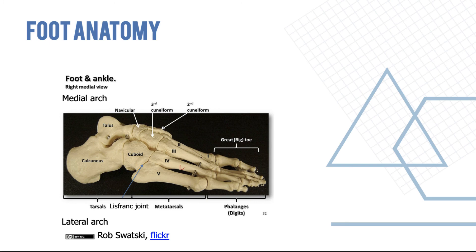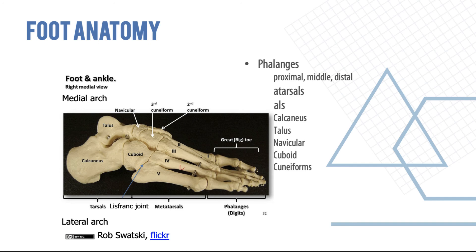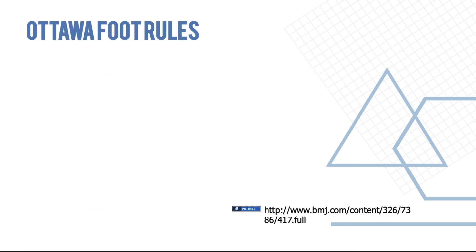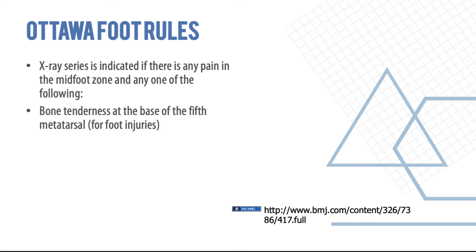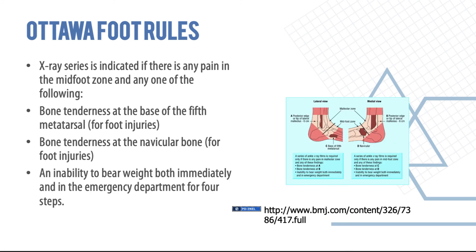The foot consists of phalanges (proximal, middle, and distal), metatarsals, and tarsals — which include the calcaneus, talus, navicular, cuboid, and cuneiform. Ottawa foot rules state that an x-ray series is only indicated if there is pain in the midfoot and any one of: bony tenderness at the base of the fifth metatarsal, bony tenderness at the navicular bone, or inability to bear weight both immediately and in the emergency department for four steps. If the patient does not satisfy these criteria, they do not need an x-ray.